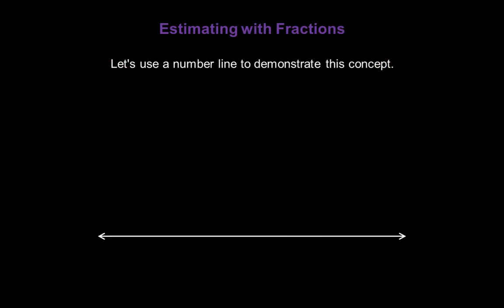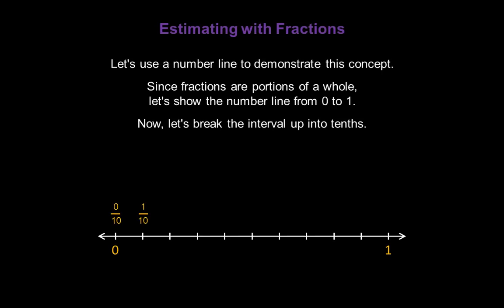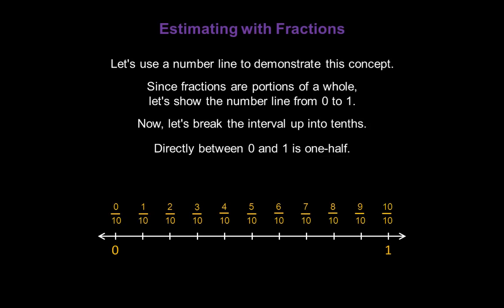Let's use a number line to demonstrate the concept of estimating with fractions. Since fractions are portions of a whole, let's show the number line from 0 to 1, and let's break the interval up into tenths. Let's put the appropriate fraction above each of those marks, all the way from 0 over 10 on the left to 10 over 10 on the right. Directly between 0 and 1 is 5 over 10, which is 1 half.